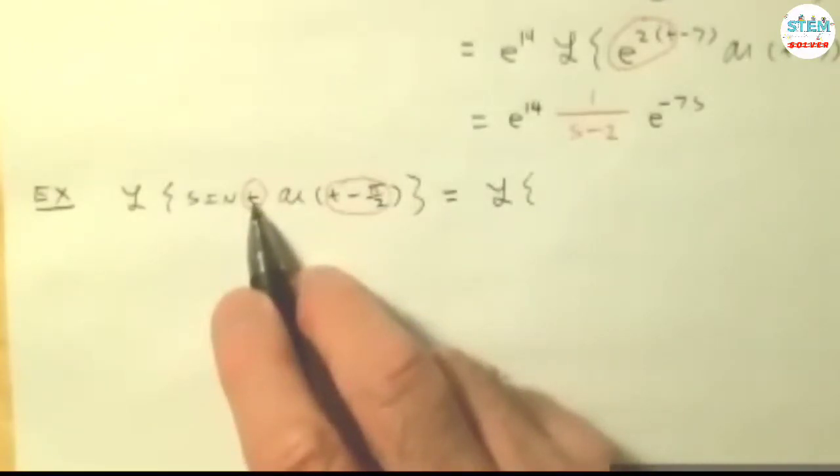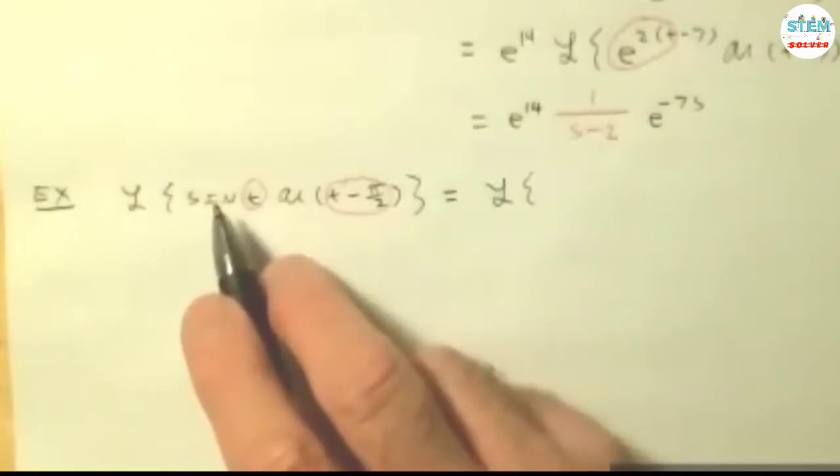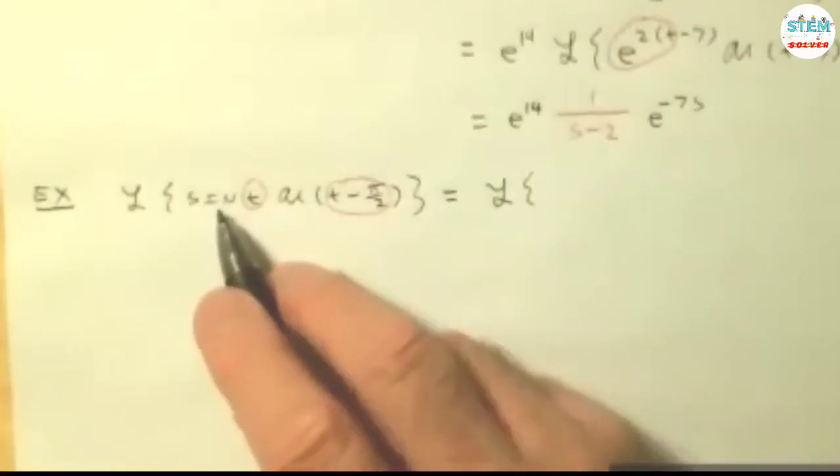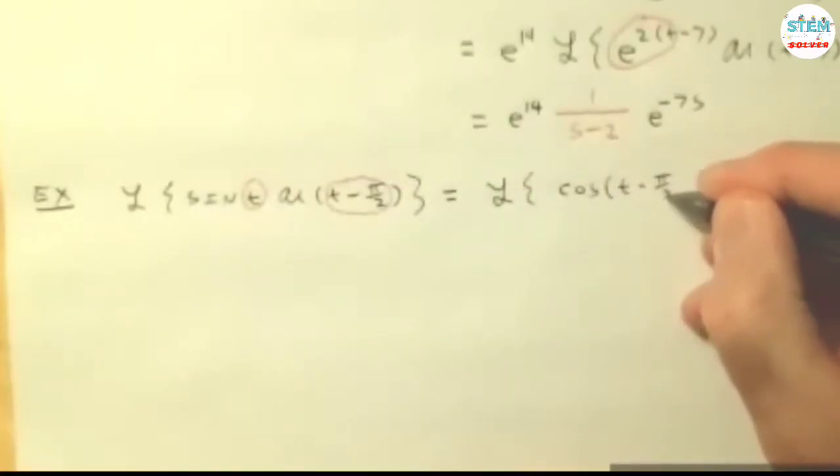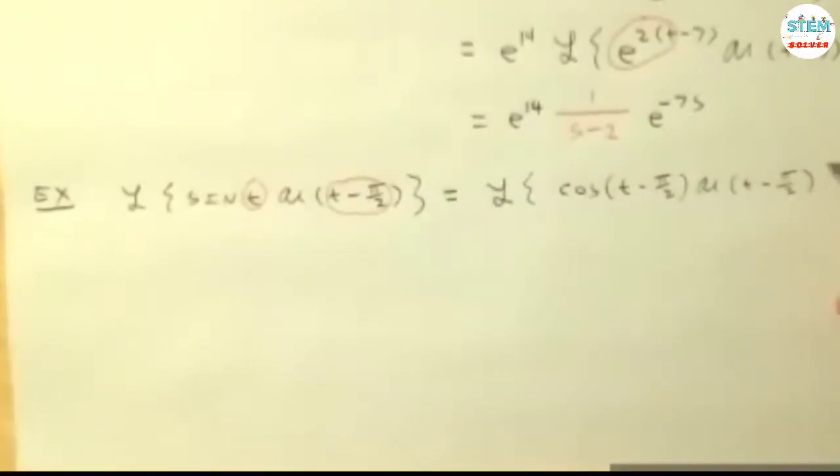And remember, when you shift by 90 degrees, you end up with a co-function. That's why it's called co-function, to shift at 90 degrees. This is why sine is called cosine when you shift t minus pi over 2 times u of t minus pi over 2.